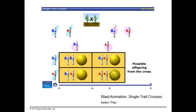A Punnett square works by placing gametes from one parent on the side and the other parent on the top. You bring the gametes together to determine what the alleles of each possible offspring will be. For example: bringing two dominant alleles together gives a homozygous dominant offspring — round peas. A recessive plus a dominant gives a heterozygous offspring, still expressing the dominant trait with round peas. But when two recessive alleles combine, that particular offspring will have wrinkled peas.